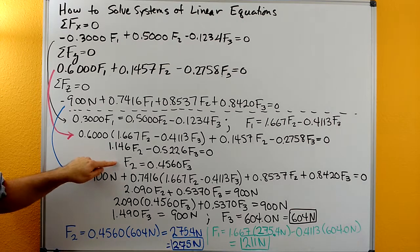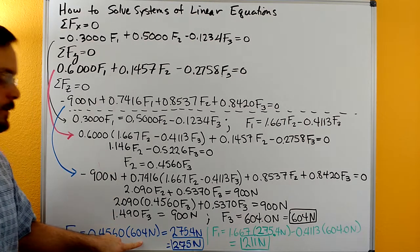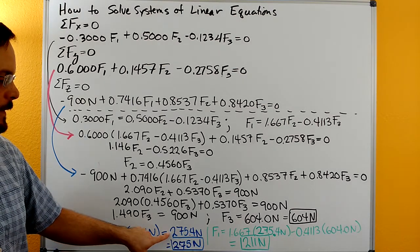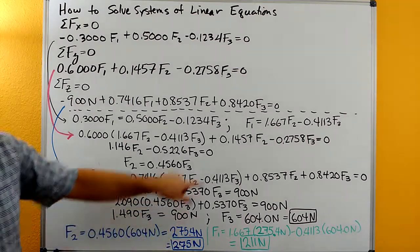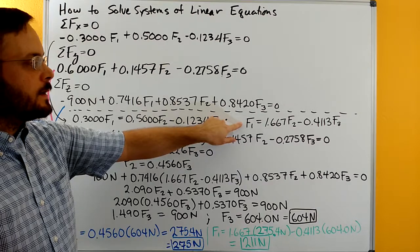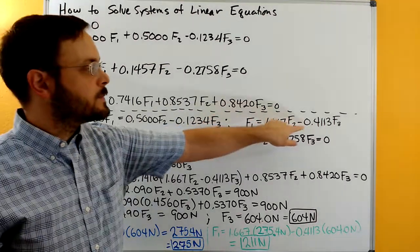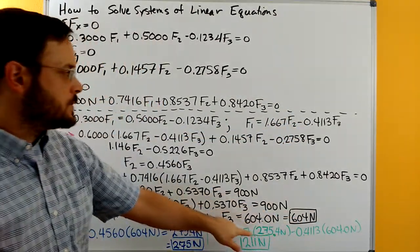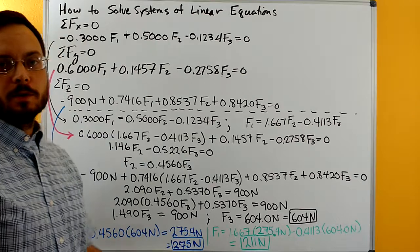Go back up to the equation f2 equals 0.4560 f3 and substitute the value you just calculated in for f3. That gives you f2 equal to 275.4 newtons, which we can round to 275. Then go back to your first equation, f1 equals 1.667 f2 minus 0.4113 f3, make both substitutions for f2 and f3, and you get f1 equal to 211 newtons. And you've solved it.